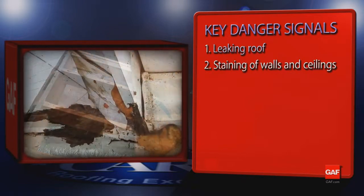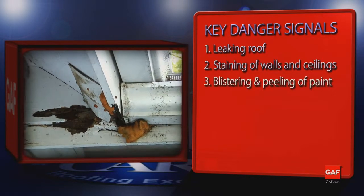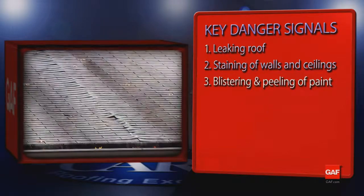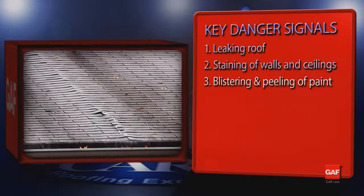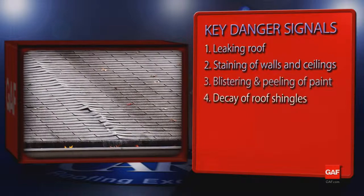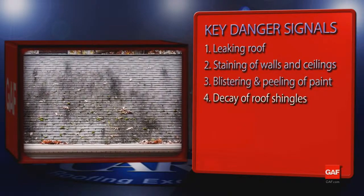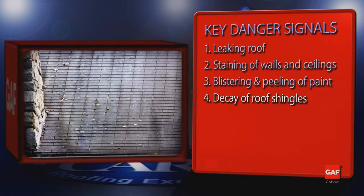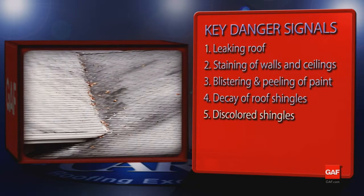For example, poor attic ventilation can result in excessive moisture, which leads to blistering and peeling of exterior paint. Another danger signal associated with poor attic ventilation may be decay of roof shingles, sheathing, or siding due to excess moisture under the roof deck.